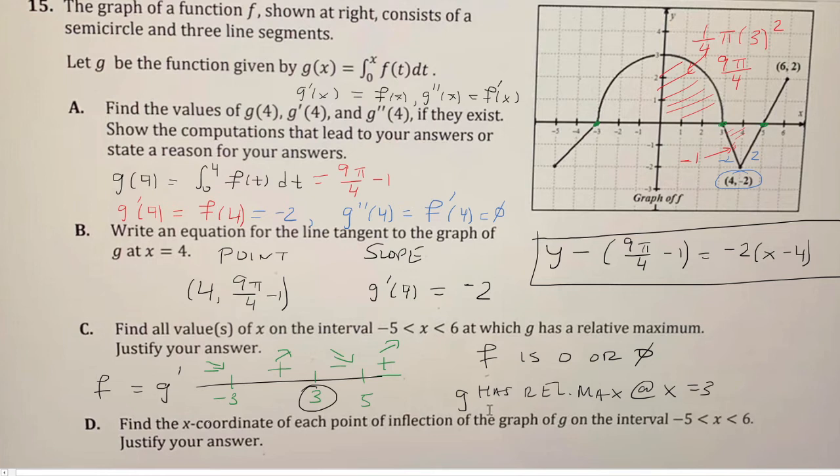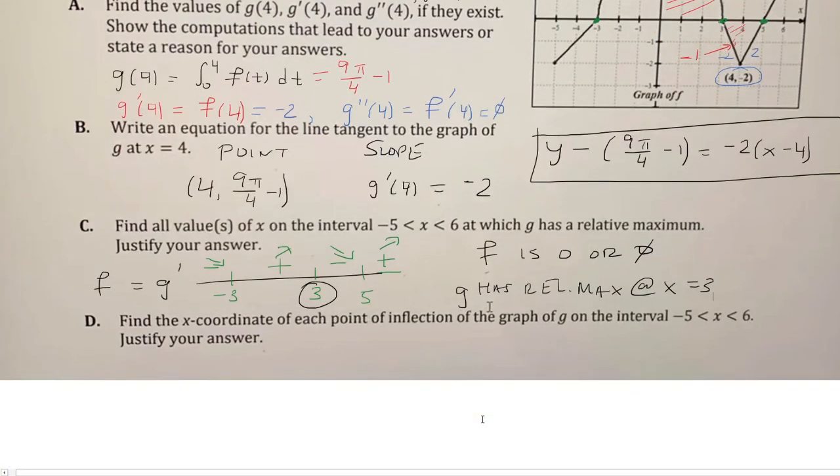And then part d, we want to find the x-coordinate of each point of inflection of the graph of g. So for that, we need the second derivative, which we said is the same thing as f prime. So we're interested when f prime is 0 or undefined.